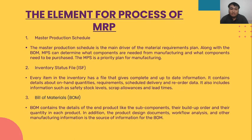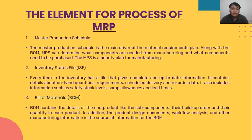Next is the element for process of MRP. Number one: master production schedule. The master production schedule is the main driver of material requirement plans, along with the BOM. The MPS can determine what components are needed for manufacturing and what components need to be purchased. The MPS is a priority plan for manufacturing.